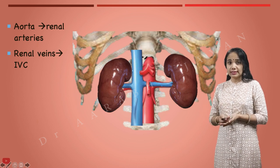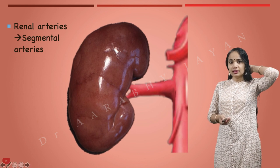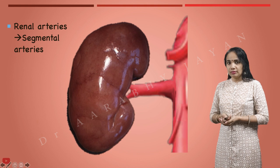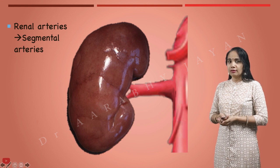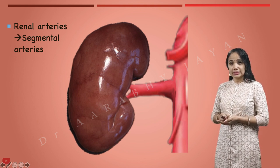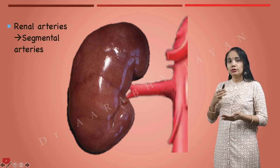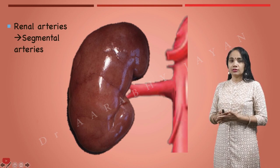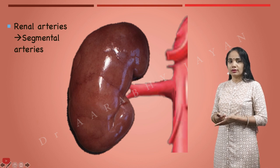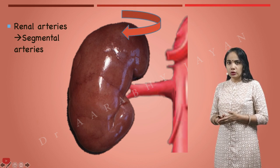When you learn about the blood supply there are different hierarchies of vessels which we need to know in detail. Let's look at the arteries. The renal arteries, which are branches from the abdominal aorta, immediately divide into segmental arteries. You can learn these by drawing a flowchart: renal artery → segmental arteries.